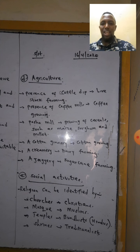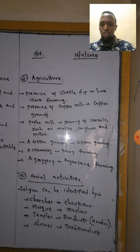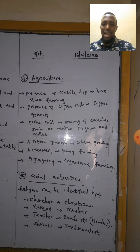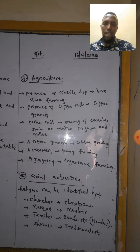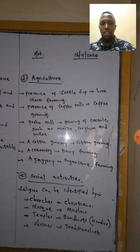Social activities can also be identified. Religious activities include: churches, which indicate Christians; mosques, which indicate Muslims; temples, which indicate Hinduism; and shrines, which indicate traditionalists.